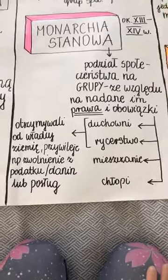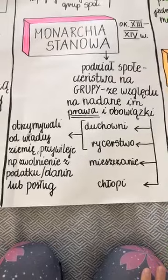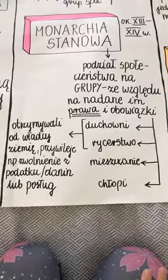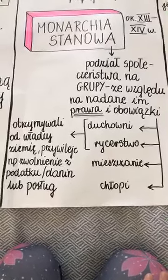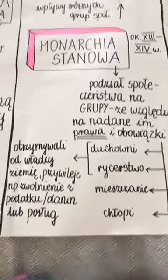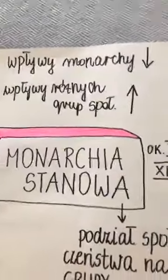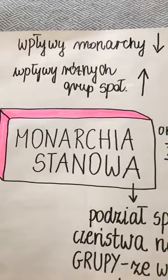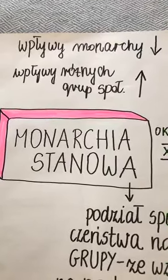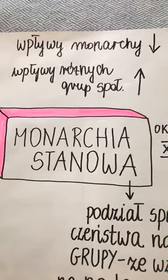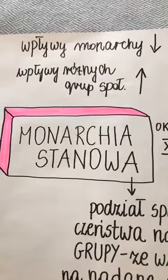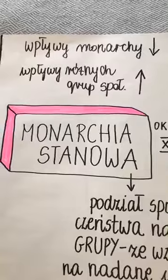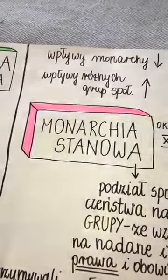Jeśli chodzi o monarchię stanową – oceniając ją szybko, to jest powtórzenie materiału z klasy piątej, więc przejdziemy zaraz do demokracji. Chciałam tylko przypomnieć, jak ten podział na grupy się zrobił i skąd w Polsce od rycerstwa przejdziemy do demokracji. W monarchii stanowej wpływy króla są podzielone – trochę spadają, a wzrastają wpływy różnych grup społecznych, przede wszystkim duchowieństwa i rycerstwa. W Europie Zachodniej władca starał się utrzymać władzę w swoich rękach.